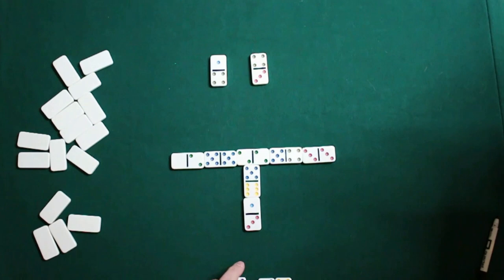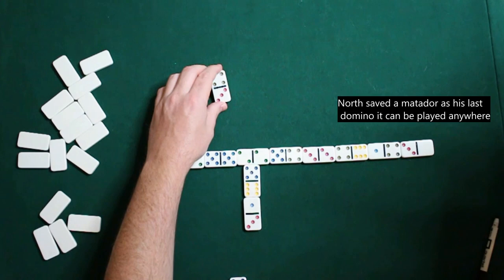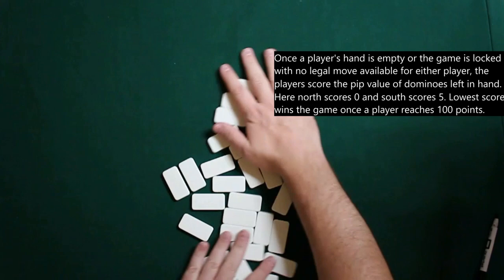Now, normally you position these doubles in a vertical sense. As soon as somebody goes out, the other player will then count the pips they have remaining in their dominoes. So in this case, south gets 5 points, north is at 0.